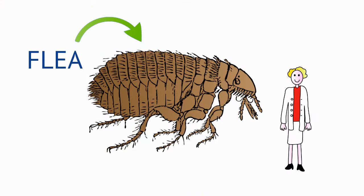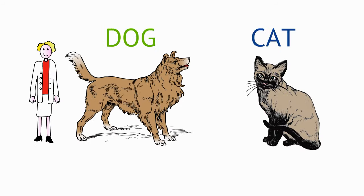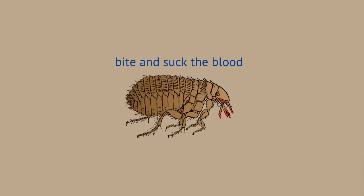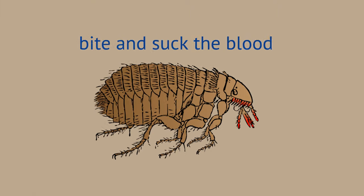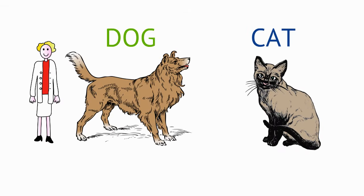Fleas are an excellent example of a parasite. They live on the fur of an animal, such as a dog or a cat, and they bite and suck the blood while the animal is still alive, feeding itself and harming the dog or cat at the same time.